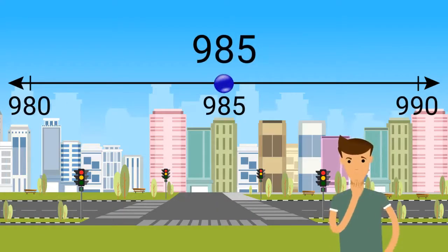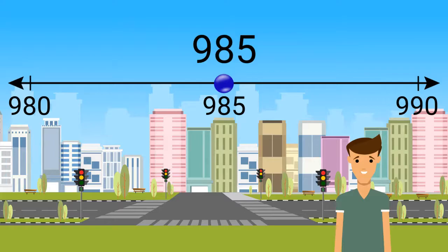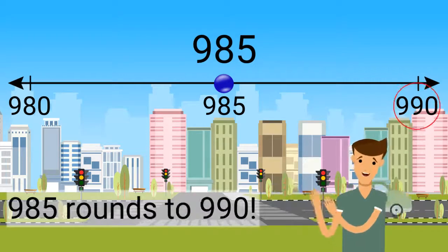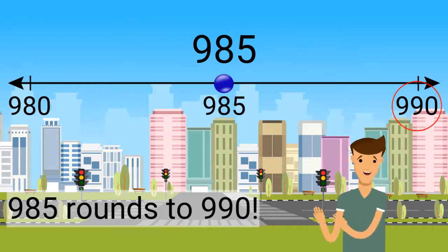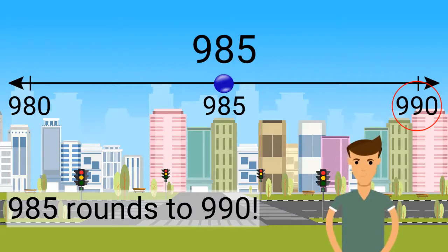What is 985 rounded to the nearest 10? 985 rounds up to 990. Remember, numbers that are exactly in between always round up.